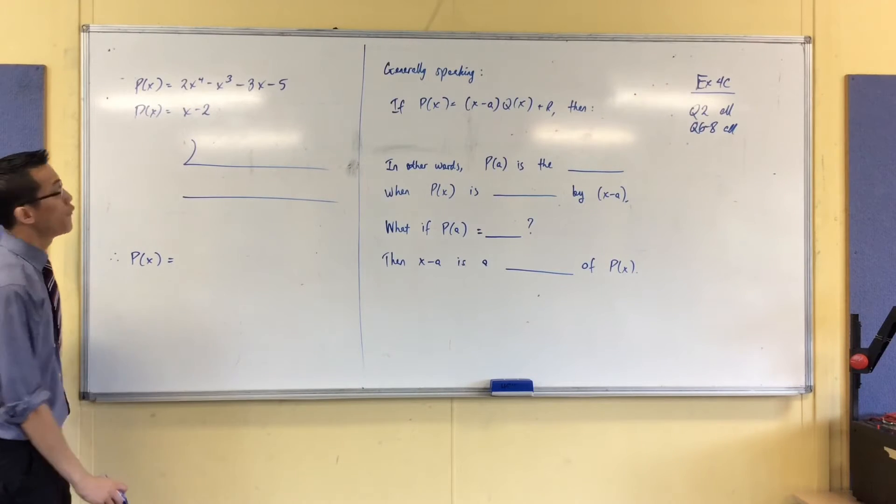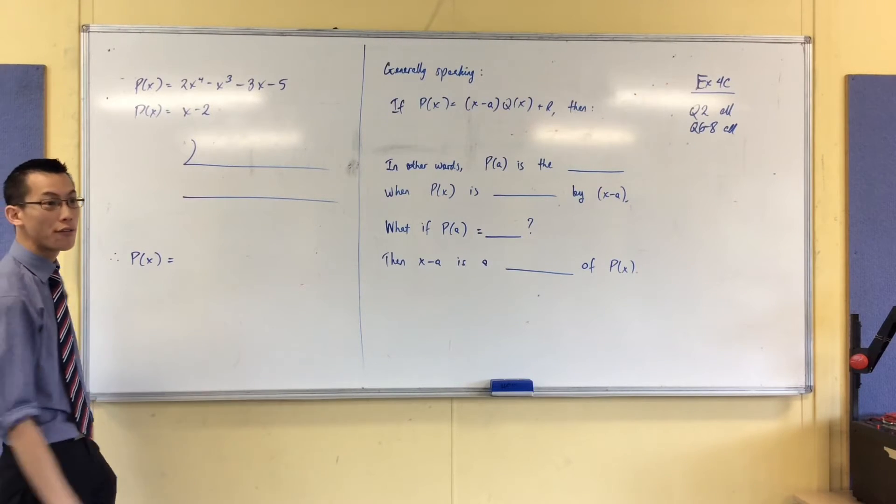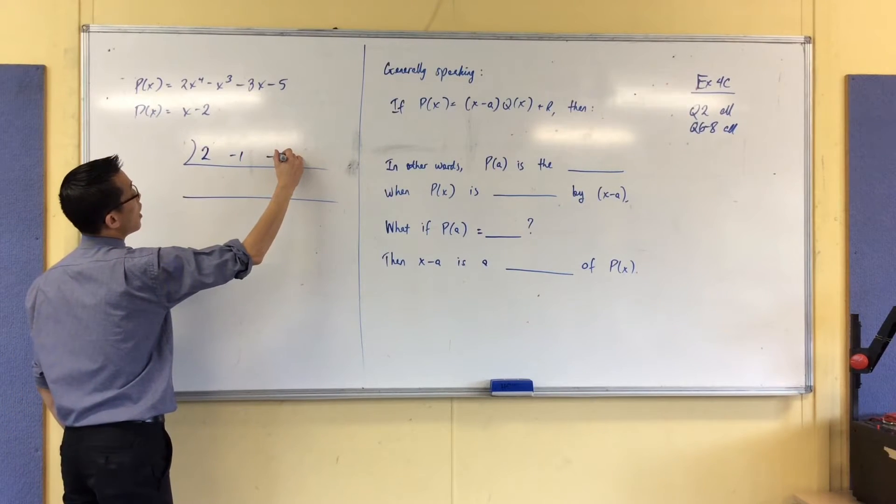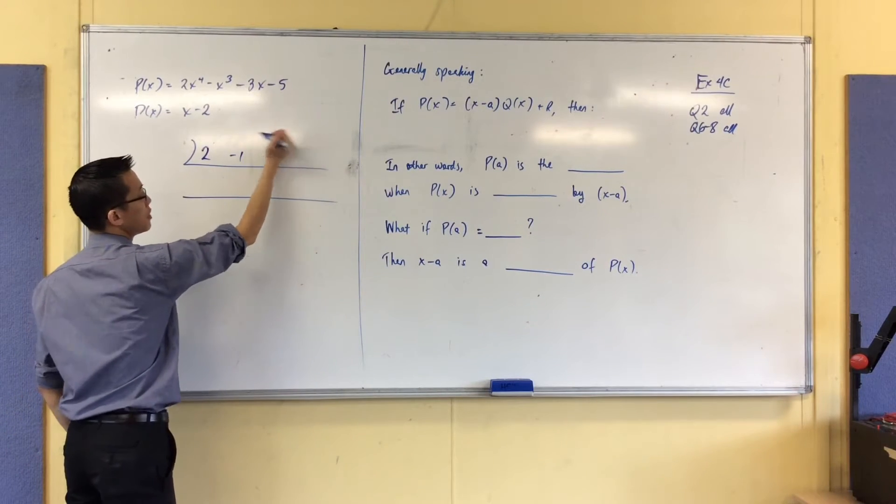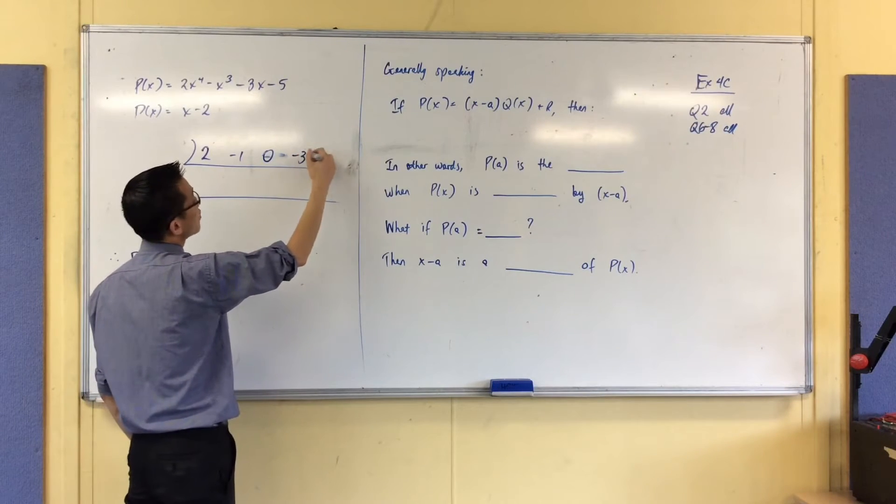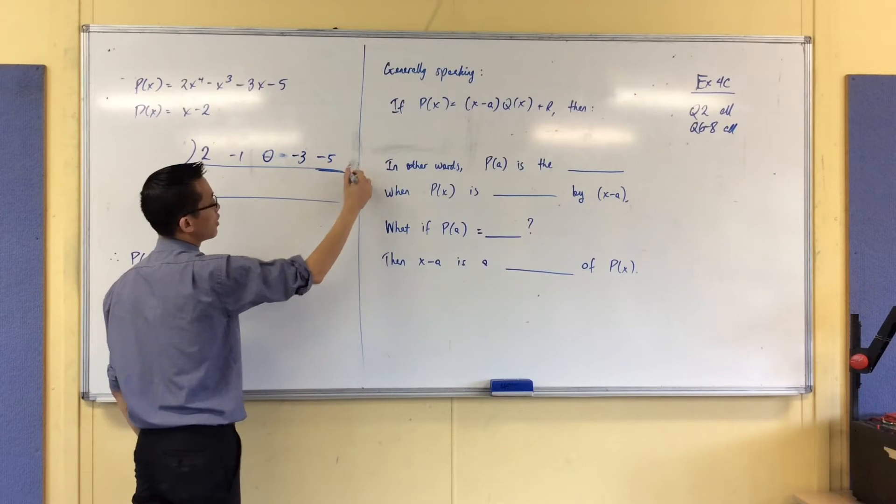So let's get the important bits now. Firstly, coefficients of the actual polynomial: 2, negative 1, 0 because there are no x squared terms, negative 3 and negative 5. Quite a lot of negatives in that.